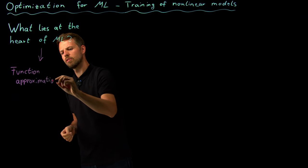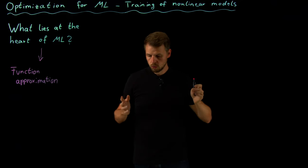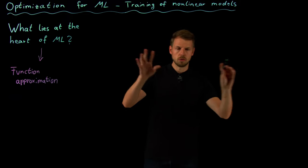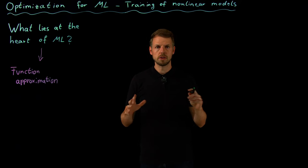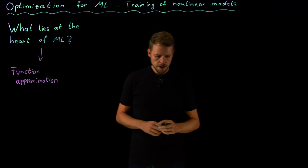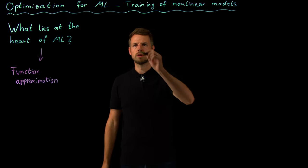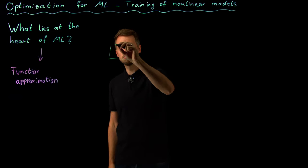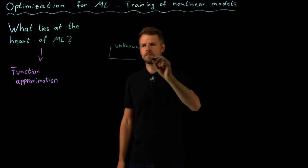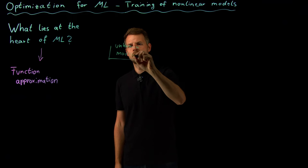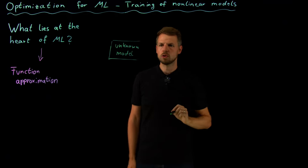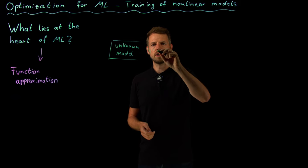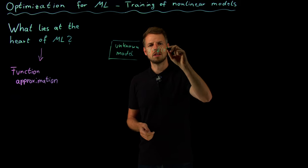This means we always have some function that we do not know, but we collect data and then try to approximate this function from data. I'm going to sketch a very general machine learning paradigm in the case of supervised learning and then draw the connection to optimization. We often have this unknown model for which we have data available. We have a relation y equals f of z plus some noise.